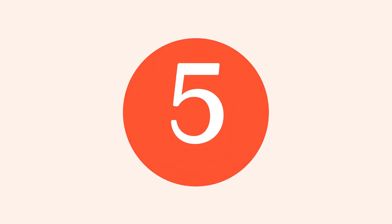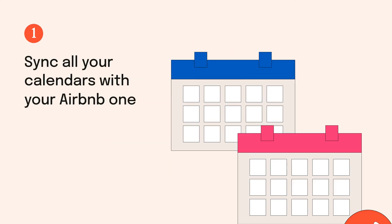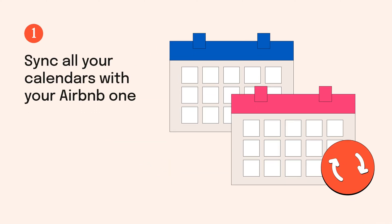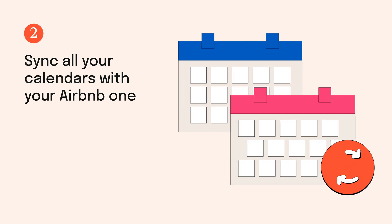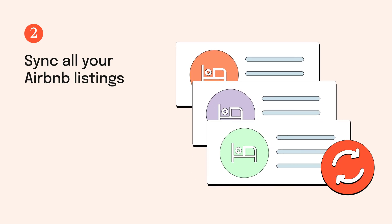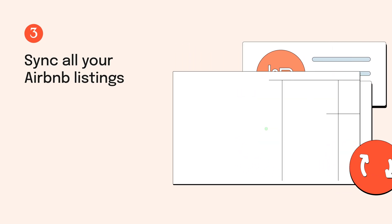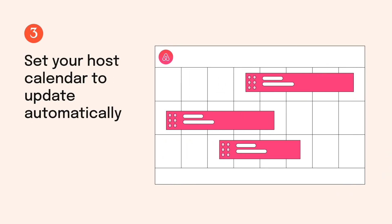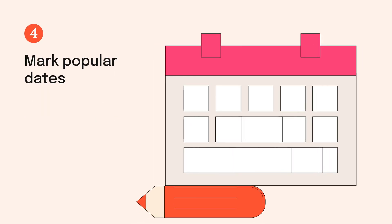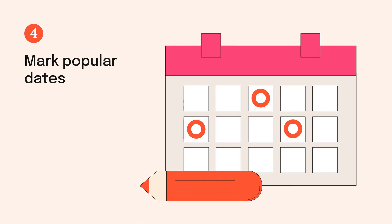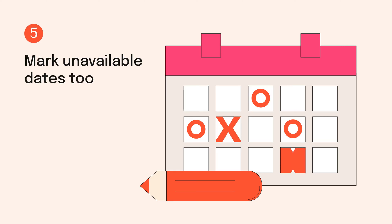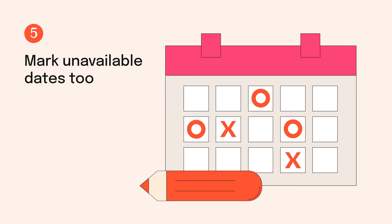So what are the top five tips for managing your Airbnb calendar? 1. Always sync your Airbnb calendars with any other calendars you use, like your Booking.com calendar. 2. If you have more than one Airbnb listing, make sure those calendars are also synced. 3. Remember to keep your host calendar updated, even better automatically. 4. Mark popular dates on your calendar, like holidays and events. 5. And remember to mark unavailable dates too, like scheduled maintenance.